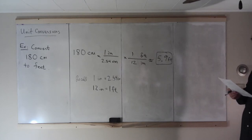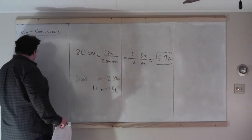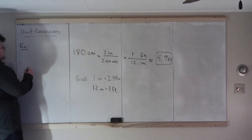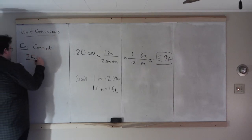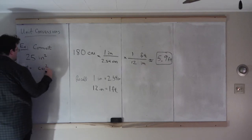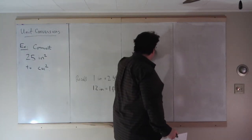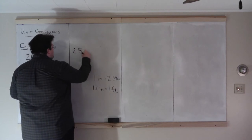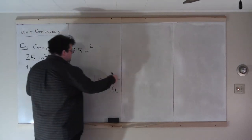Let's do a couple more. In the previous video, we talked about squared and cubed quantities. Let's see how that works with unit conversions. Convert 25 inches squared to centimeters squared. Again, we want to keep track of our units. We're starting with 25 inches squared, and we want to write this in terms of centimeters squared. We have a relation between centimeters and inches.